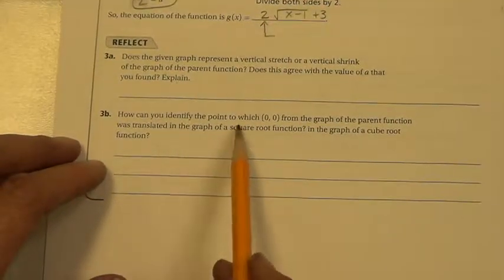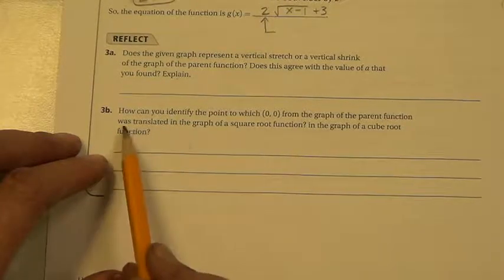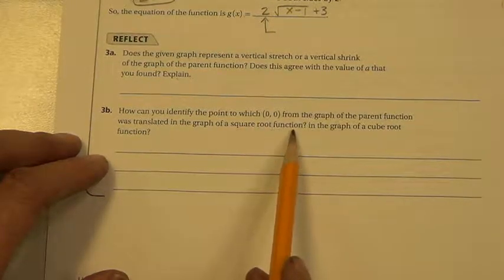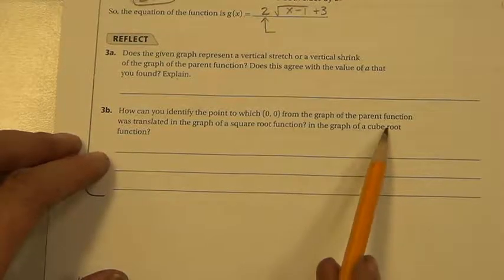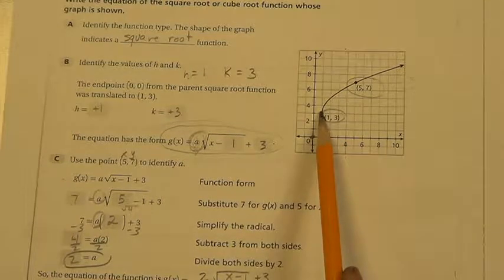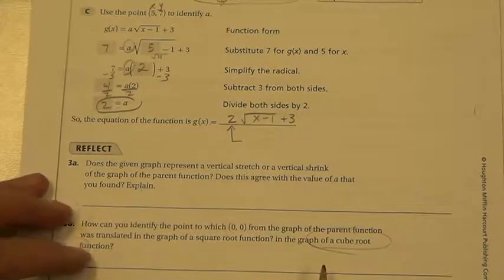The last one. How can you identify the point to which 0, 0 from the graph of the parent function was translated in the graph of the square root function? In the graph of a cube root function. So they're saying, how can you tell that this is your h and your k? And also look on the cube root function and see how you can tell.